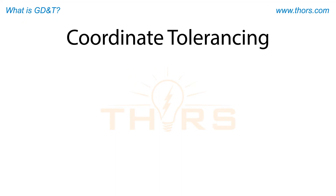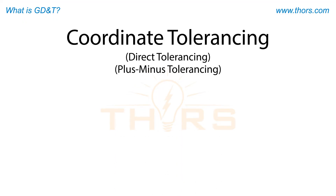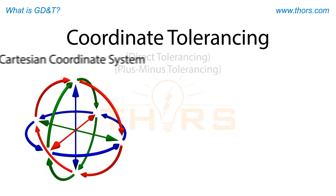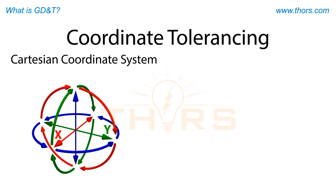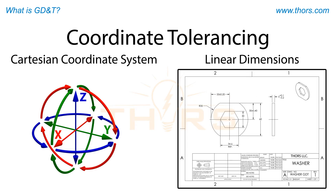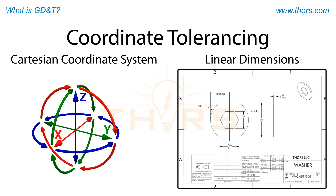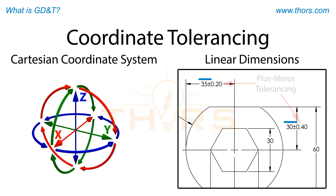Coordinate tolerancing — also called direct tolerancing or plus-minus tolerancing — is defined as a tolerancing system that uses the x, y, and z coordinates and linear dimensions combined with plus-minus tolerances to specify the size of features and surfaces on a drawing.